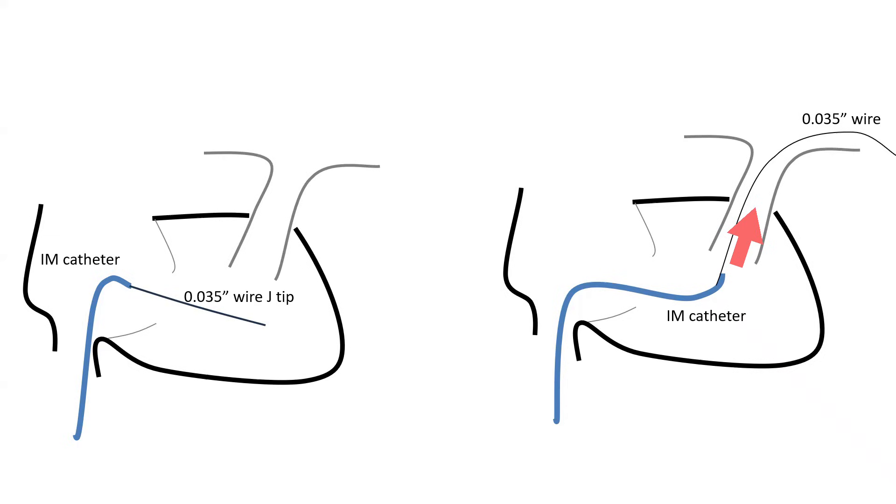So I torque it up, then as it's pointing up, I advance the 0.035 J-tip wire deep into the PA and I track over it the IM catheter.